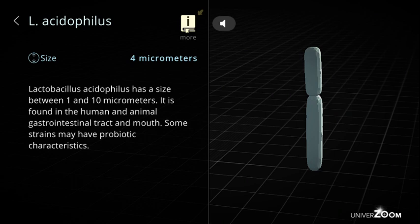L. Acidophilus, size: 4 micrometers. Lactobacillus acidophilus has a size between 1 and 10 micrometers. It is found in the human and animal gastrointestinal tract and mouth. Some strains may have probiotic characteristics.